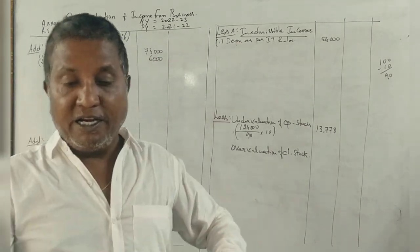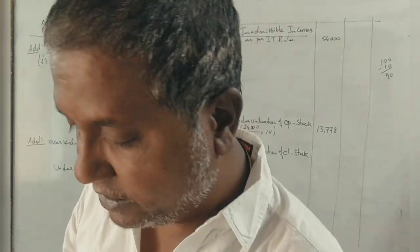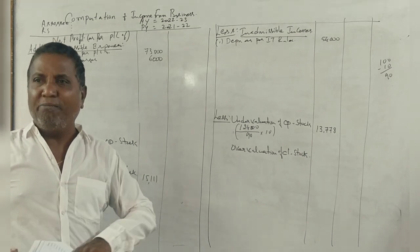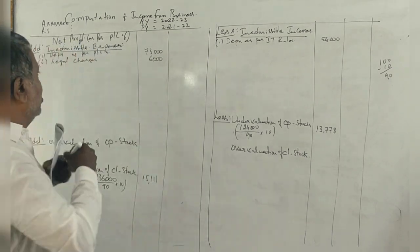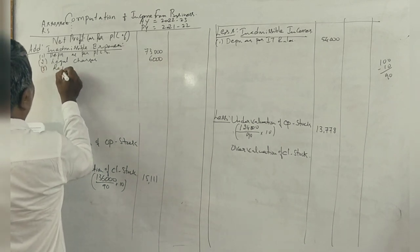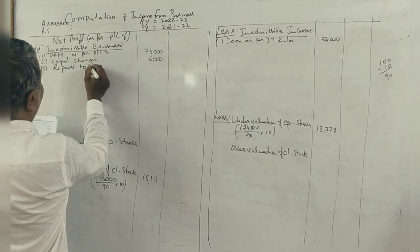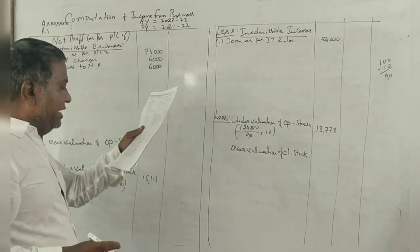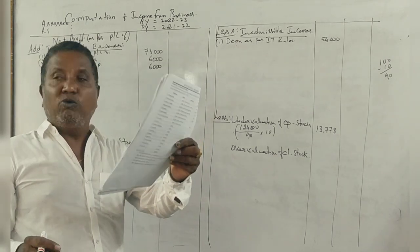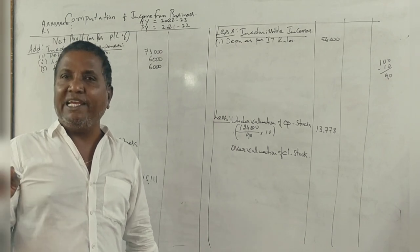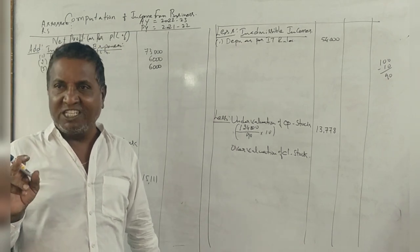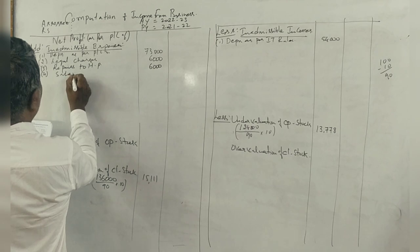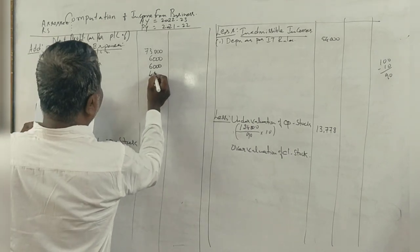Repairs includes 6,000 related to house property. So the money is paid to house property, repairs to house property, 6,000 rupees. Next, salary includes 4,000 paid to a domestic servant. Domestic servant is not business expense, it's house property. 4,600.